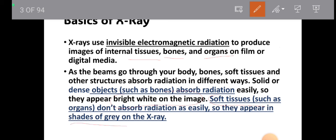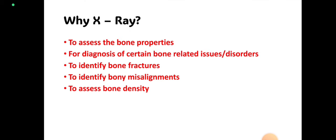Soft tissue appears as shades of gray on the x-ray film. X-rays are used to assess bone properties for the diagnosis of certain bone-related issues and disorders, to identify bone fractures, to identify bone misalignments, and to assess bone density. Summing up, we use x-ray for imaging of bone; soft tissue cannot be visible on the x-ray film because of less density.